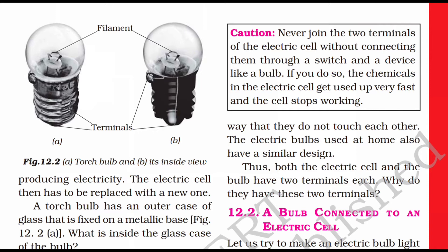Both the electrical cell and the bulb have two terminals each - one positive and one negative. Never join the two terminals of the electrical cell directly without connecting them through a switch or a device like a bulb. If you do, the chemicals in the electrical cell will get used up very fast and the cell will stop working quickly.